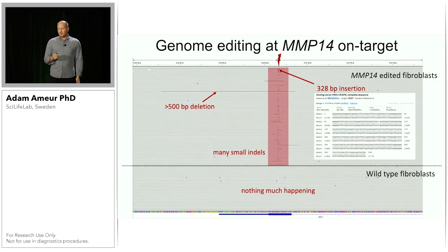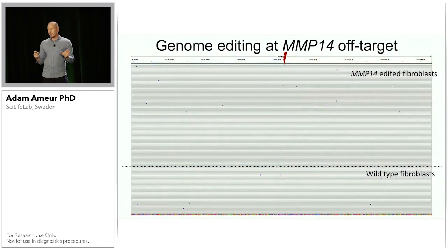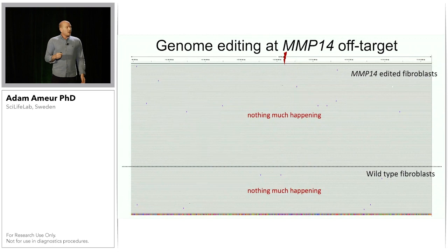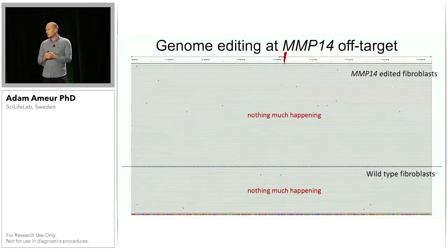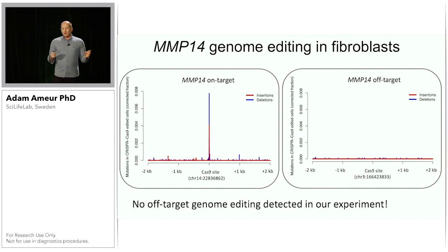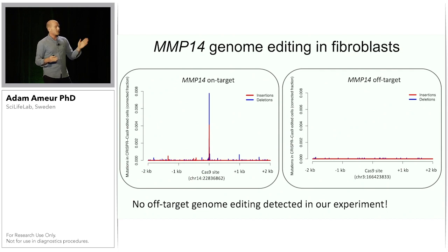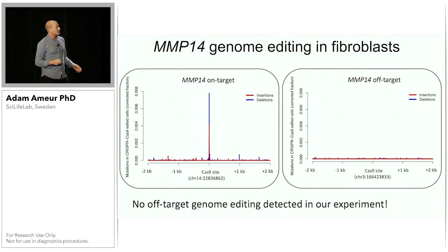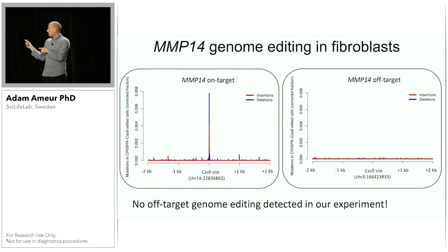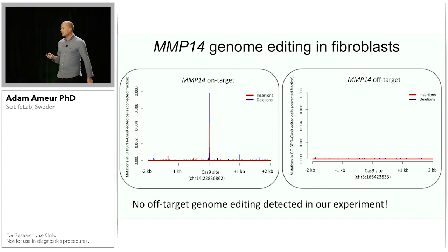But what happens at the off-target sites? At one off-target site found with many reads in both Smart OTS and nanopore sequencing, we did not see much happening at all in either the edited fibroblasts or the wild type. We don't see any evidence of editing there. Calculating across all reads, there is a very high peak of insertions and deletions at the on-target Cas9 site, but at the off-target site we don't see this at all — we find no off-target genome editing in this experiment.